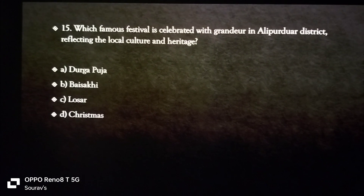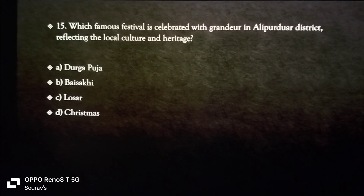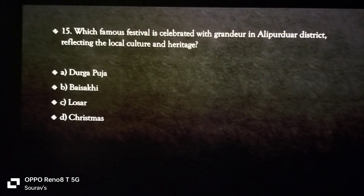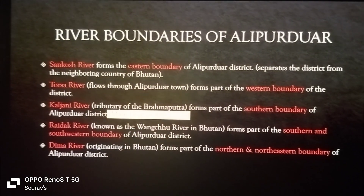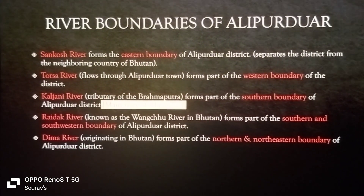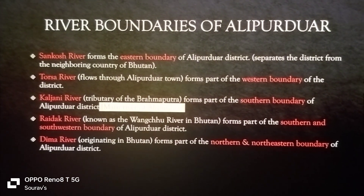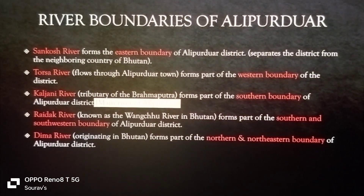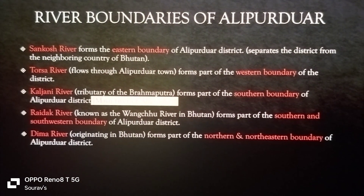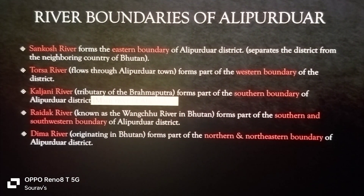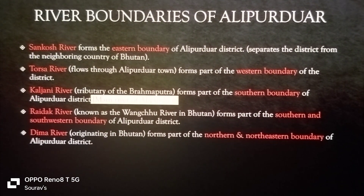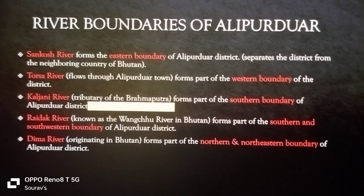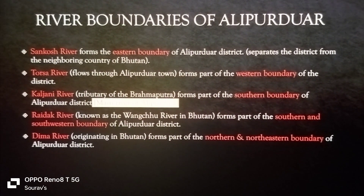All over West Bengal, Durga Puja is the most famous festival. Losang is located in Ladakh, and Durga Puja is the most famous festival — option A is the correct answer. Now we have to give the river boundaries. Which river forms the eastern boundary in Alipurduar district? This is the Sankosh River.